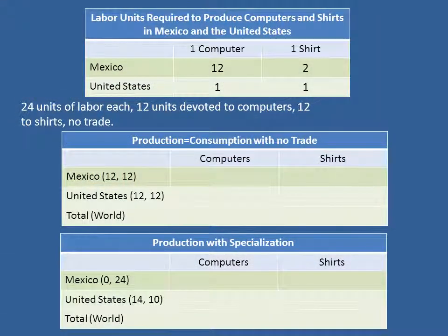Remember, our basic data is in the top figure right here. We want to now answer: suppose that there are 24 units of labor, 12 devoted to computers and 12 to shirts. How many computers and shirts in Mexico? Well, if Mexico devotes 12 units of labor to producing computers and it takes 12 units of labor to produce one computer, then you're going to get one computer. In Mexico, it takes two units of labor to produce one shirt, so if you devote 12 units of labor to shirt production, you're going to get six shirts.